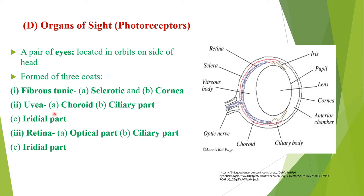Next is the uvea, also called the vascular coat. It is the middle part of the eye formed of three parts: choroid, ciliary part, and iridial part. The choroid is the thin part that absorbs extra light, darkens the eyeball, and provides nutrition to the retina. The ciliary part is the thickened part of the uvea, less vascular and less pigmented, containing two types of ciliary muscles: circular muscles and meridional muscles. The iridial part is pigmented and muscular in nature, containing the pupil, whose size is regulated by different muscles.